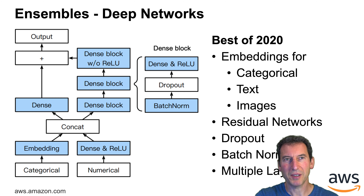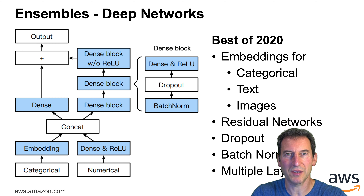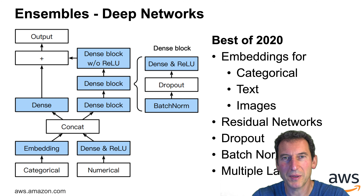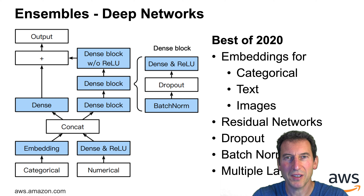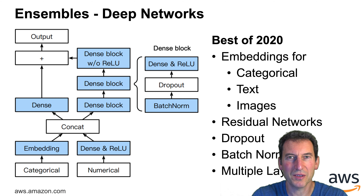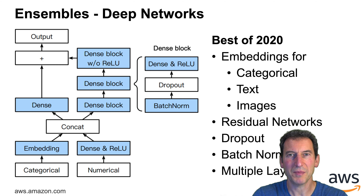You might say that's great, but you have some other custom model you've worked on for a very long time and you'd like to include it. Turns out you can, because AutoGluon actually allows the user to add their own custom model in order to make something very specific and optimized for their needs.